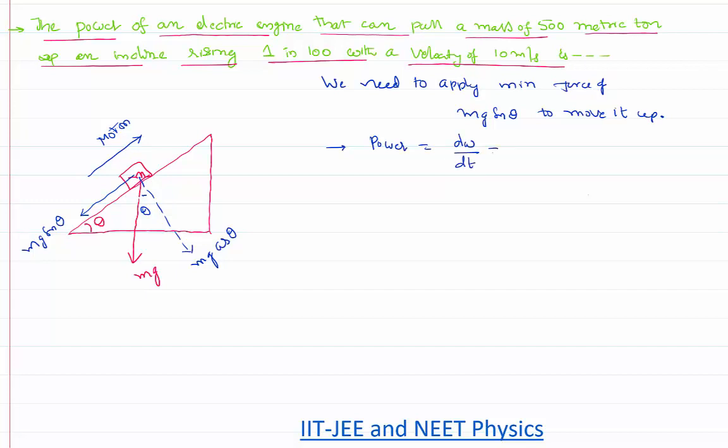dW by dt. Work done is nothing but F dot s by time. Yes, displacement by time is nothing but velocity, so power can also be expressed as F dot V.